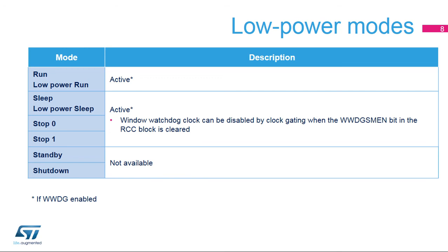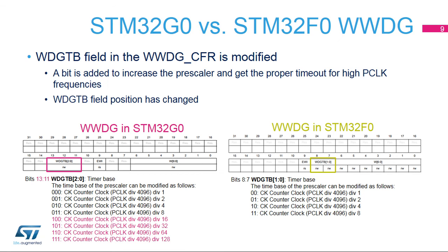The window watchdog is active in run modes. In sleep and stop modes, it can be frozen by clearing the corresponding bit in the RCC block. In standby and shutdown modes, the window watchdog is not available. Note that the format of the WWDG_CFR register is not identical in the STM32F0 and STM32G0 window watchdogs. The STM32G0 microcontroller supports an additional bit to extend the pre-scaler ratio value to 128.